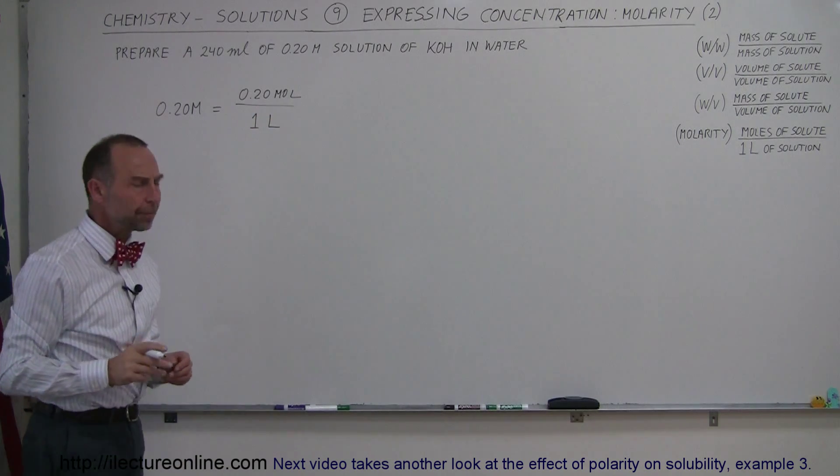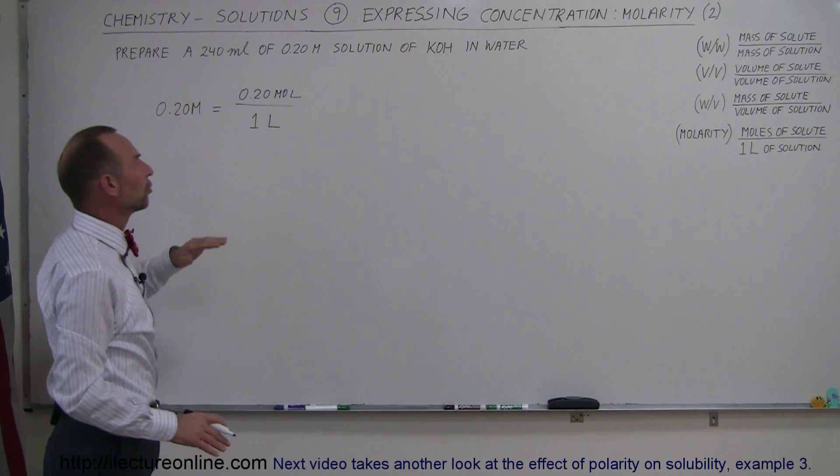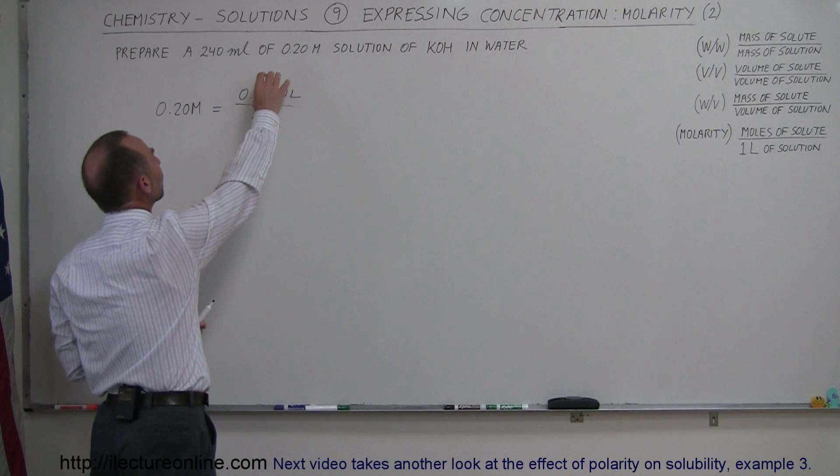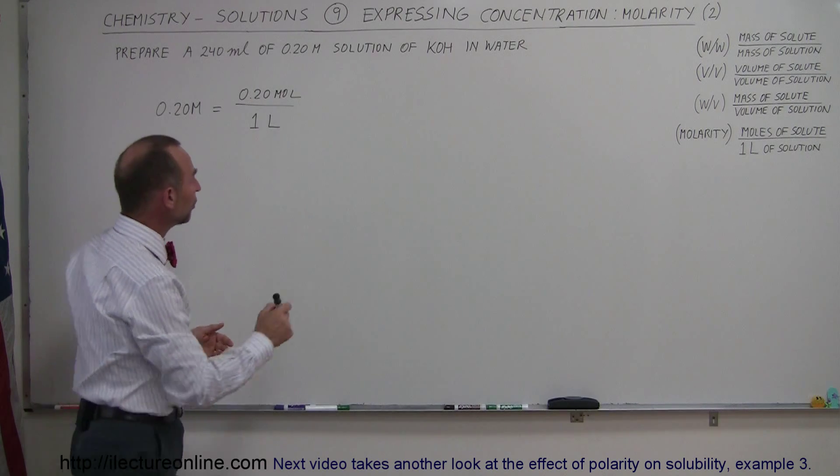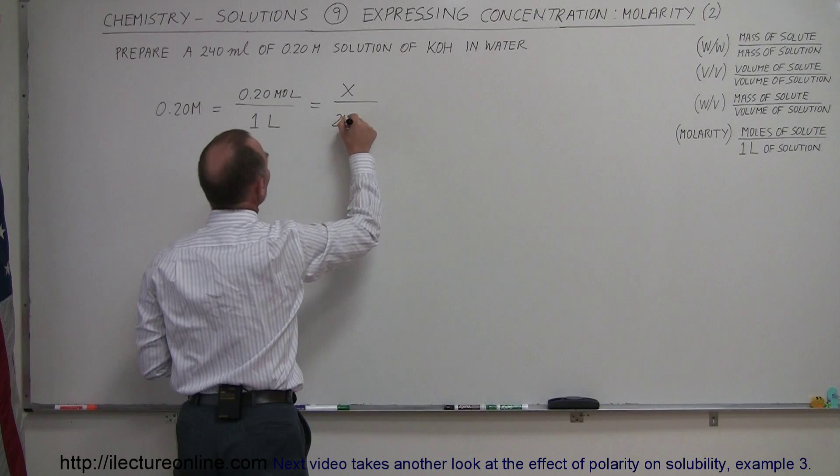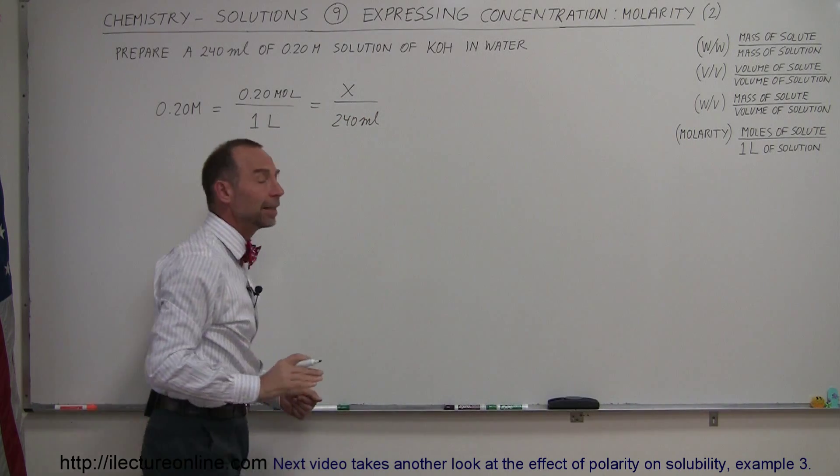Alright, but we don't want a liter of solution, we want a 240 milliliter solution. So what we're going to do is we're going to find the equivalent number of moles that we need to make only a 240 milliliter solution that is 0.2 molar. Which means we want X number of moles divided by 240 milliliters. So instead of a liter, we want only 240 milliliters.